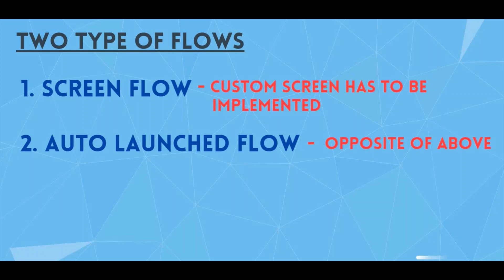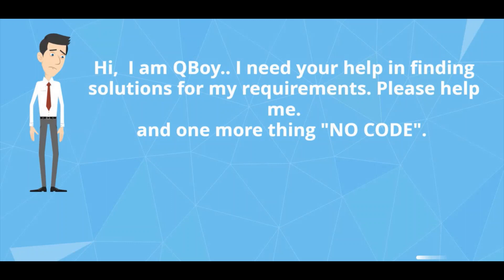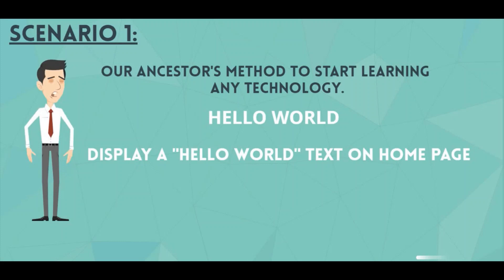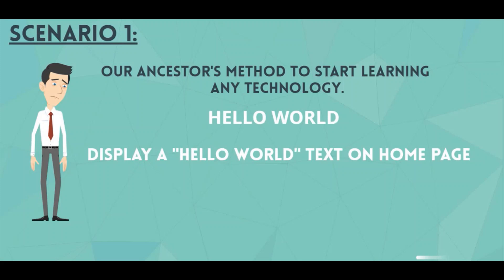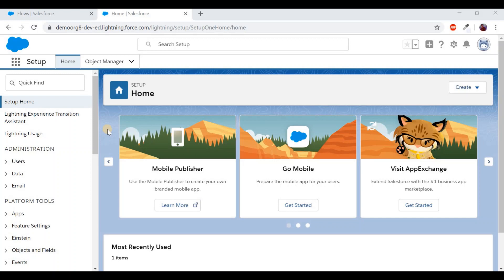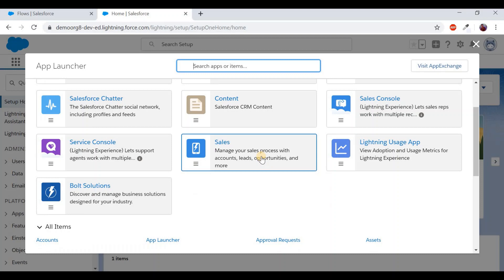A character called Cuboy joins in asking for help finding solutions with no code required. We're going ahead with flows, which don't involve even a single line of code. The first scenario is to display a 'Hello World' text message on the home page — the classic method to start learning any technology, as a token of respect to our ancestors.